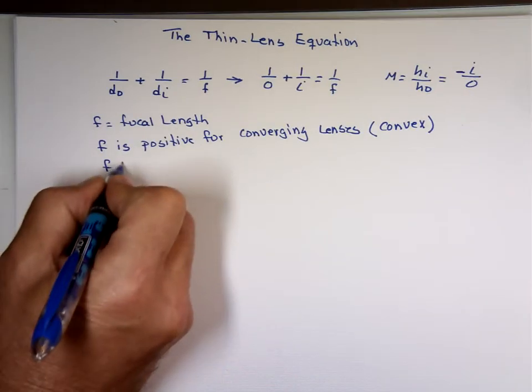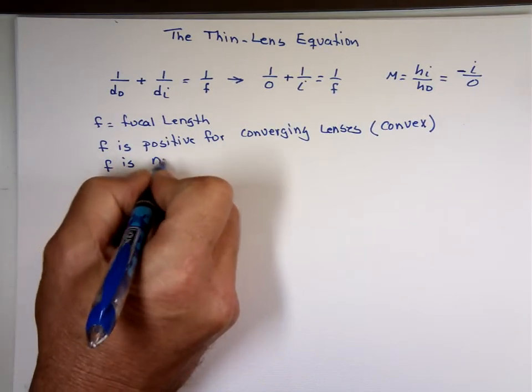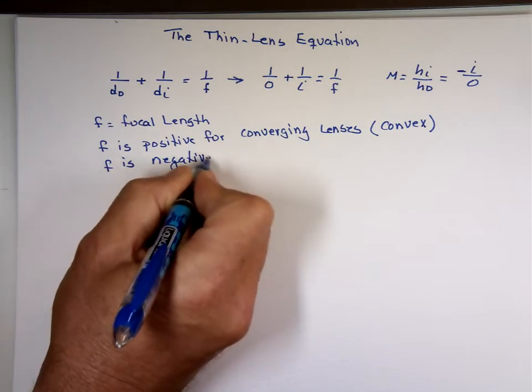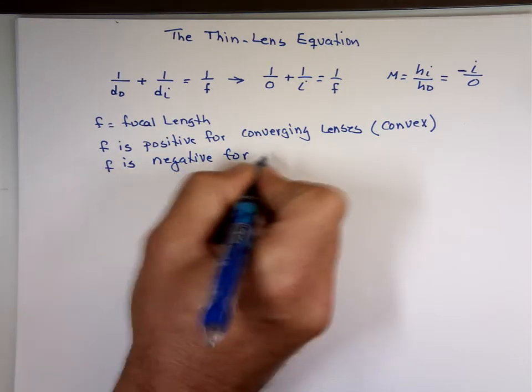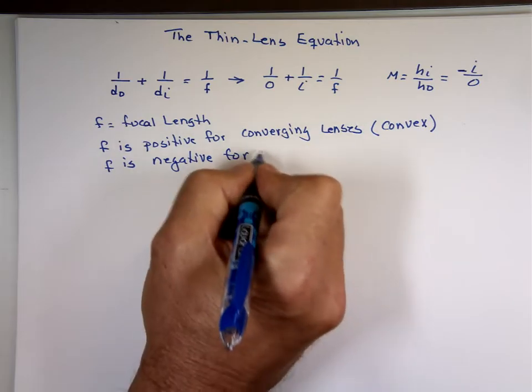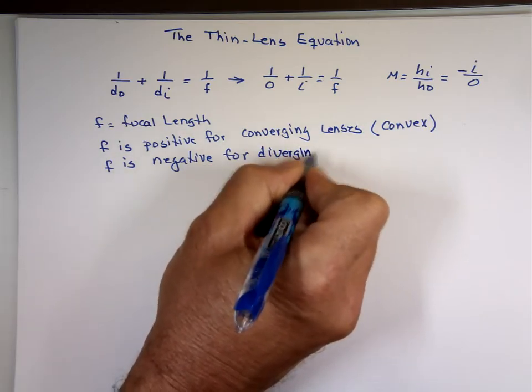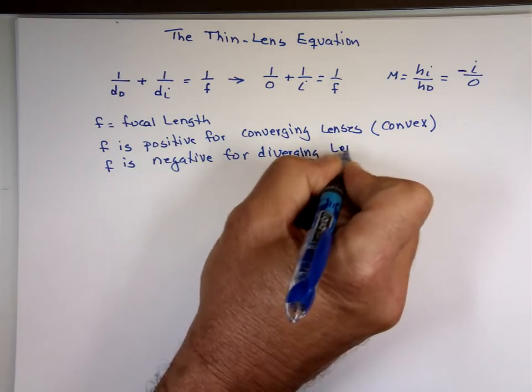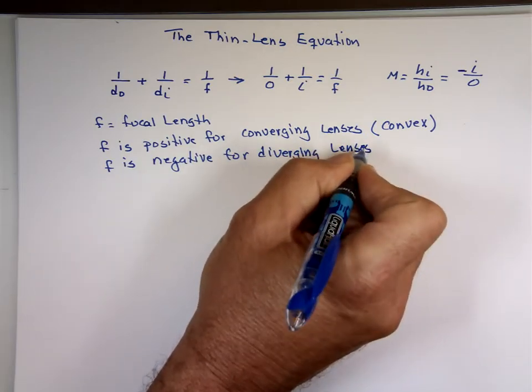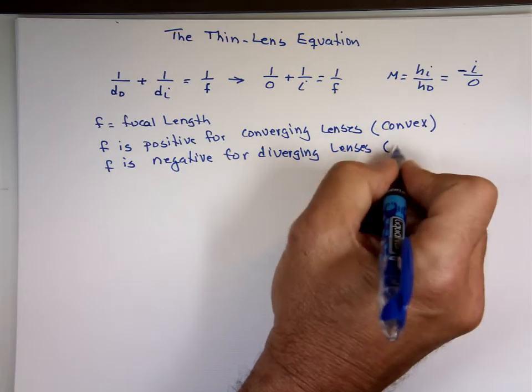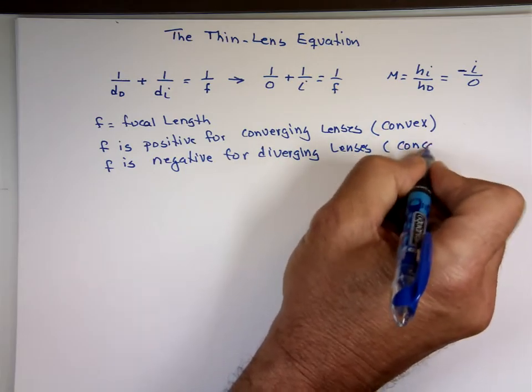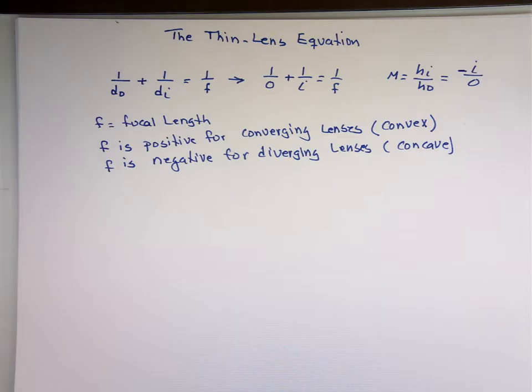F is negative for diverging lenses. And they use the word concave for diverging here. So when they say we have a concave lens, that's diverging. When they say we have a convex lens, that's converging.